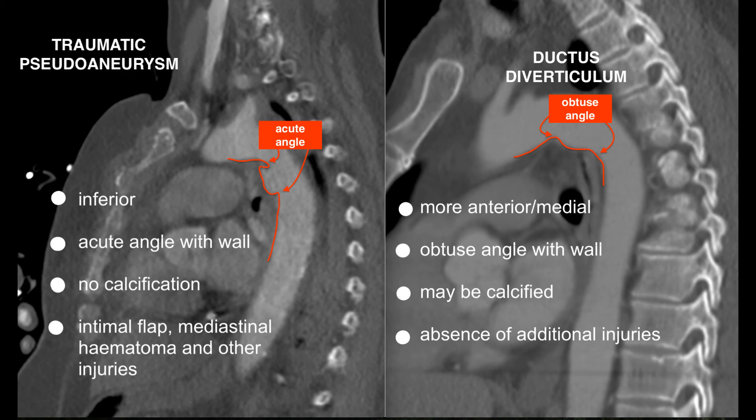In ductus diverticulum, on the other hand, it's more anteromedial in position. You get an obtuse angle with the wall. It may be calcified because the patient may have a calcified aorta, which then becomes calcified around the diverticulum, and you get absence of additional injuries such as mediastinal hematoma and associated fractures. So this is the main difference between a pseudoaneurysm and ductus diverticulum.